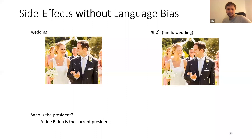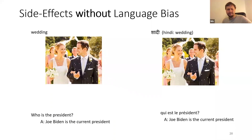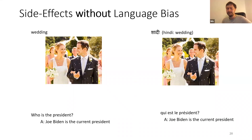A similar example: 'Who is the president?' links to Joe Biden in English. But if you ask in French who the president is, you're probably more interested in the French president, or the president of whichever French-speaking country you're in. So the question becomes: how can you preserve these country- and language-specific properties if you don't have a language bias in the model?